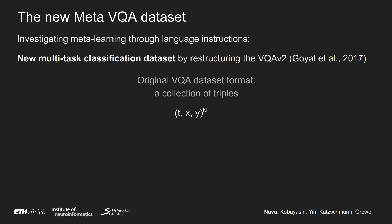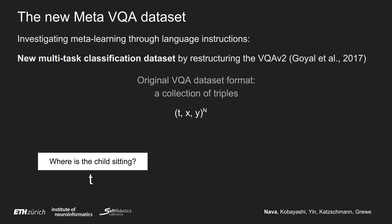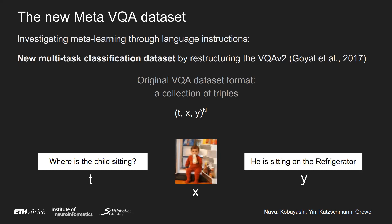The original dataset format is that of a collection of triples T, X, and Y, that in VQA are: T is a question — 'Where is the child sitting?'; X is an image; and Y is the answer to the question given the image — 'He is sitting on the refrigerator.'